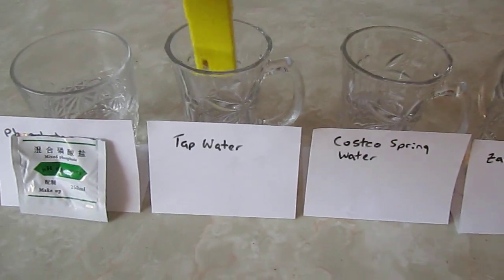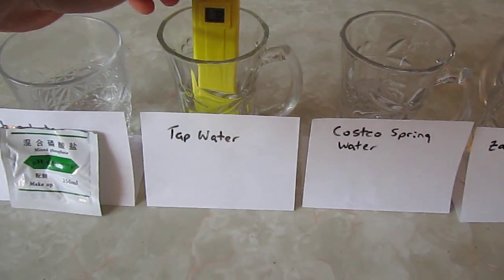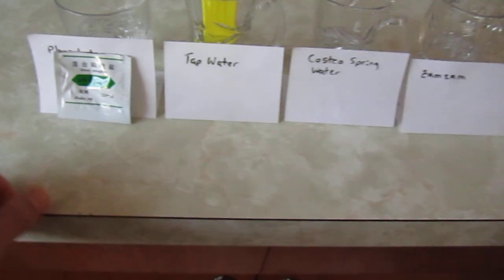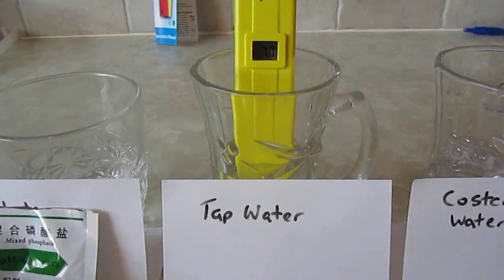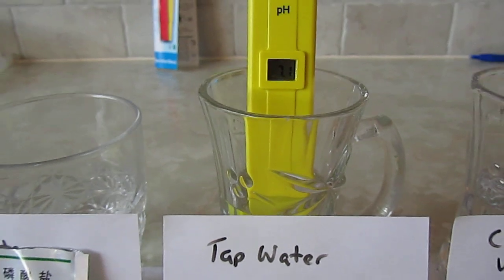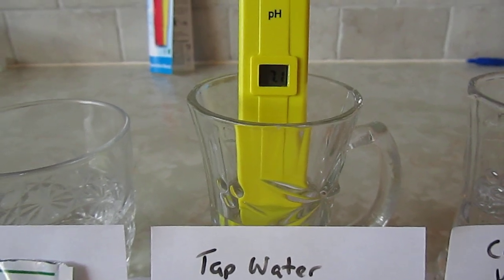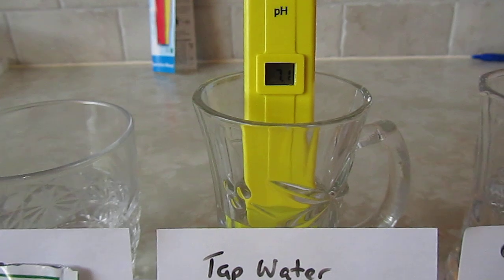This here is some tap water from the city of Edmonton and let it stabilize, about 7.1, might get up to 7.2.